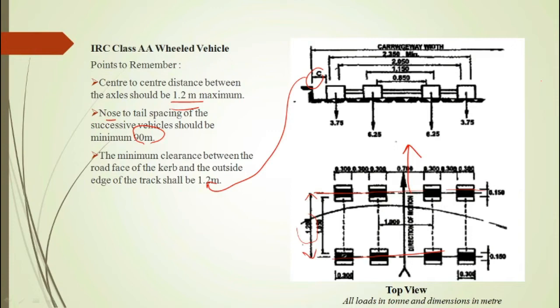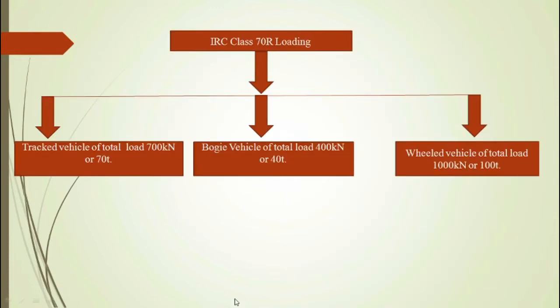Now let us move on to IRC Class 70R loading. A vehicle is said to be of IRC Class 70R loading if it is a tracked vehicle of total load 700 kN or 70 ton, or it is a bogey vehicle of total load 400 kN or 40 ton, or it is a wheeled vehicle of total load 1000 kN or 100 ton.